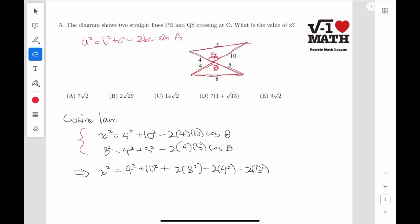And this gets us x squared is equal to 4 squared plus 10 squared minus 2 times 4 times 10 times cosine of theta. And 8 squared is equal to 4 squared plus 5 squared minus 2 times 4 times 5 times cosine of theta.